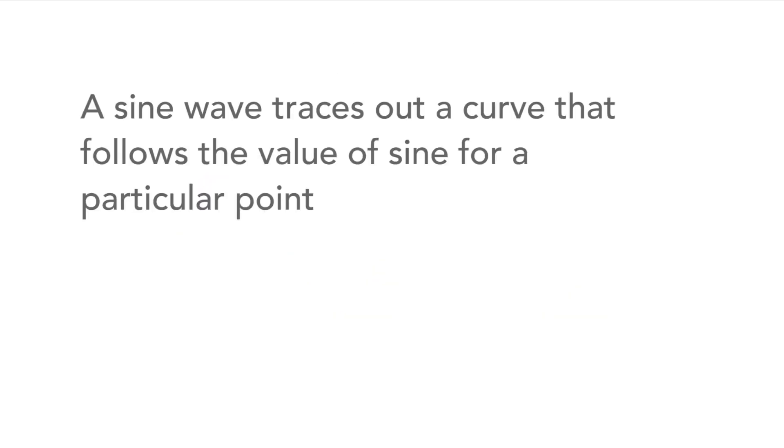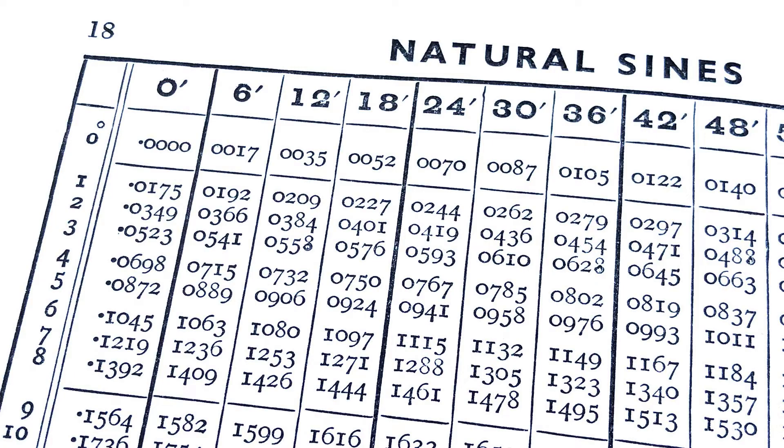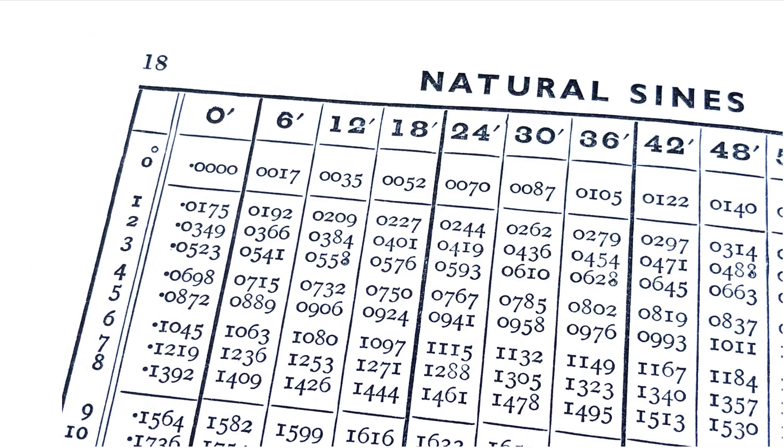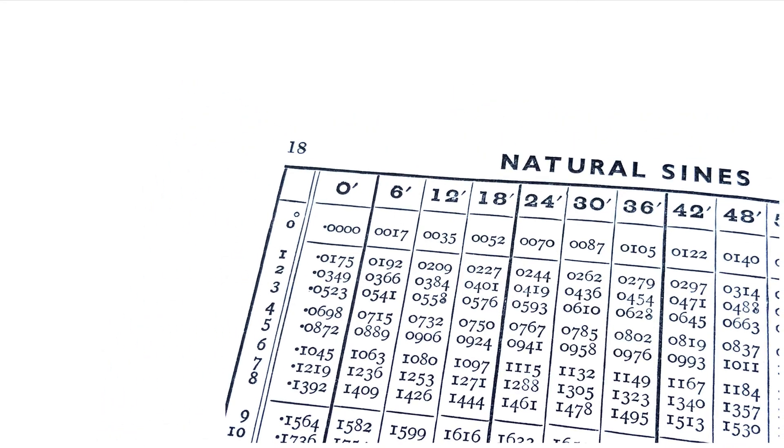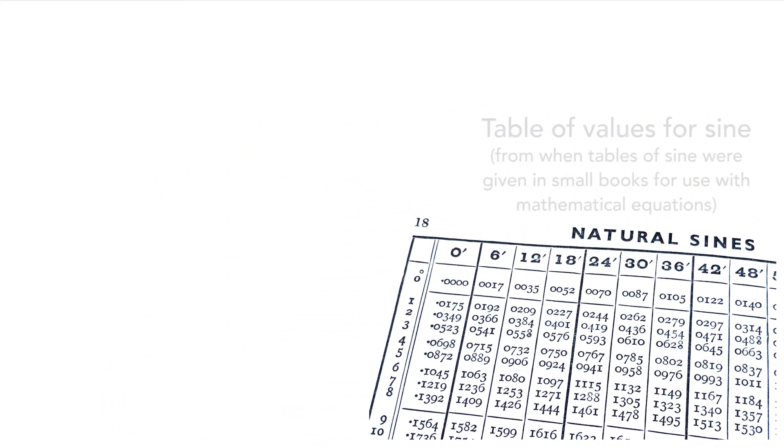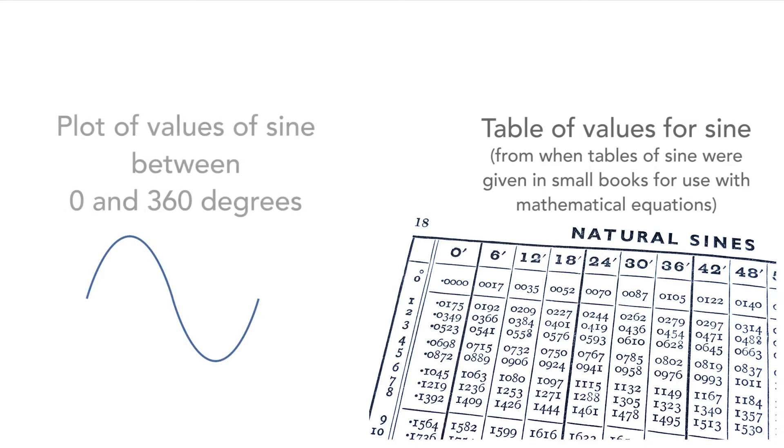As the name suggests, a sine wave traces out a curve that follows the values of the trigonometrical value of sine. We could look up the value of sine between 0 and 360 degrees or 0 and 2π radians, whichever you want, and then plot them and we would see that the points would trace out a sine wave shape.